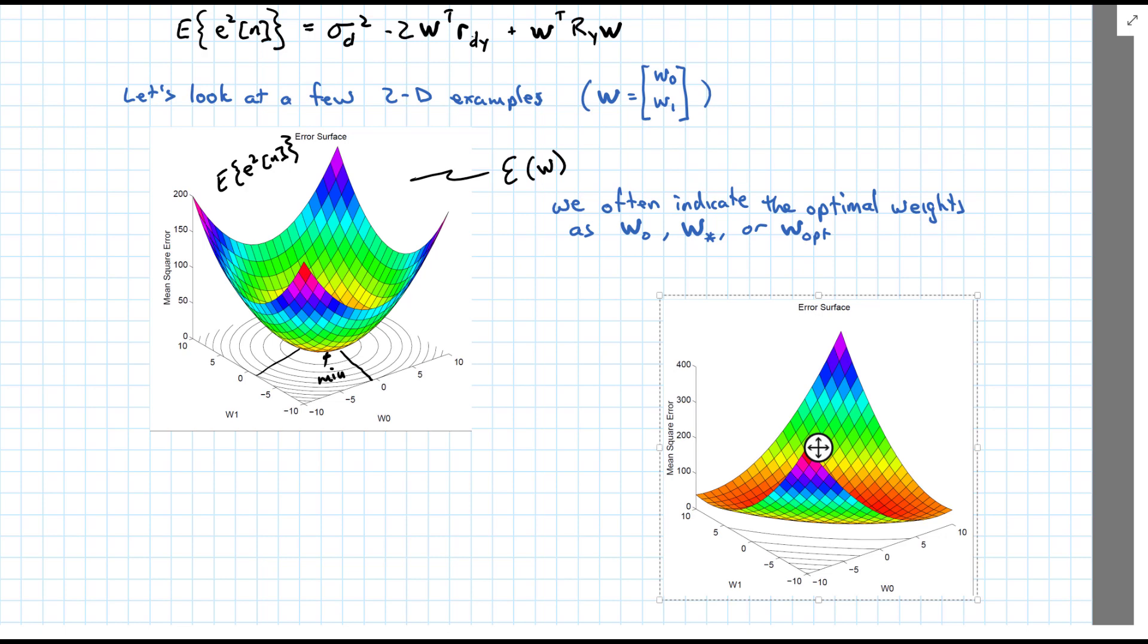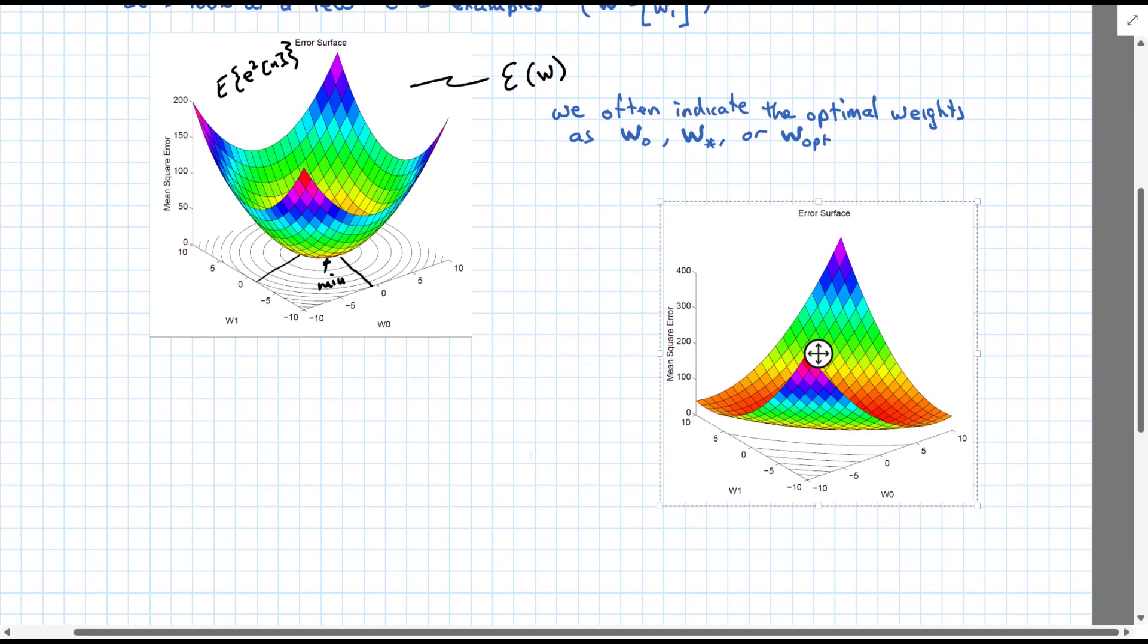It's a quadratic surface, but obviously it's stronger in one direction than another. Our first example, you can see by looking at the contours that are projected underneath the plot, that appear to be almost circular. In this example, they would be very elongated, in our new example, very elongated ellipses.